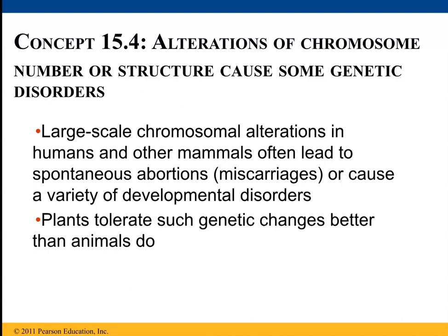This is in animals. Plants, on the other hand, can tolerate genetic alterations much better than animals do. Plants can be trisomy or tetrasomic, where they have three or more of each chromosome, and this just leads to different varieties of fruit rather than spontaneous abortion or miscarriage like in animals.